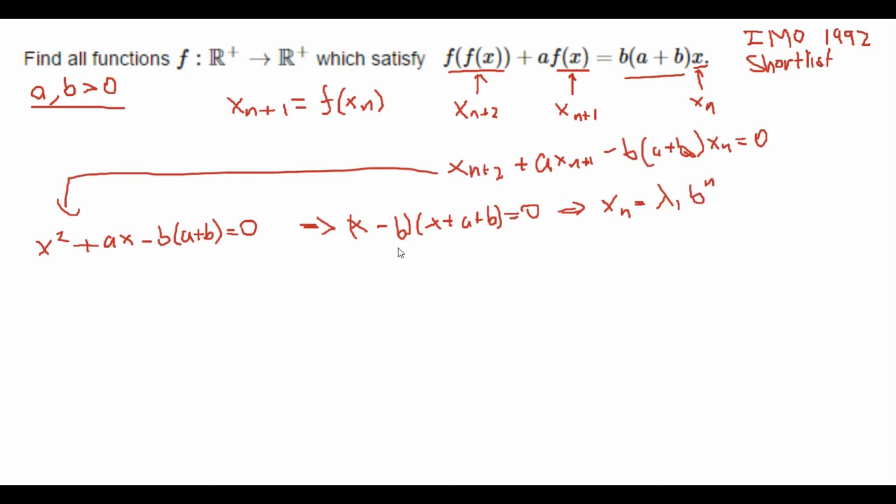Times b^n. We have this first root here. Plus λ₂. Remember these are just constants. Times (−a−b)^n which is our second root here.